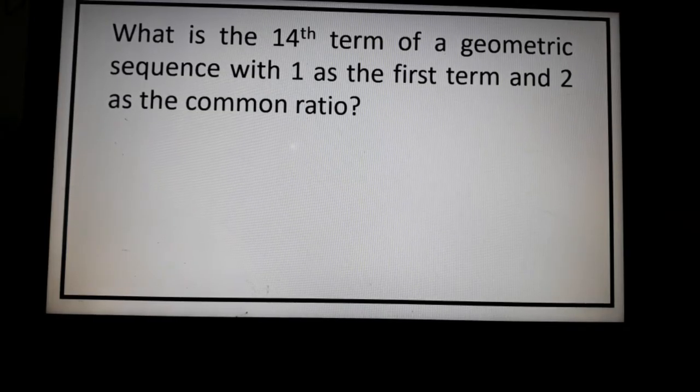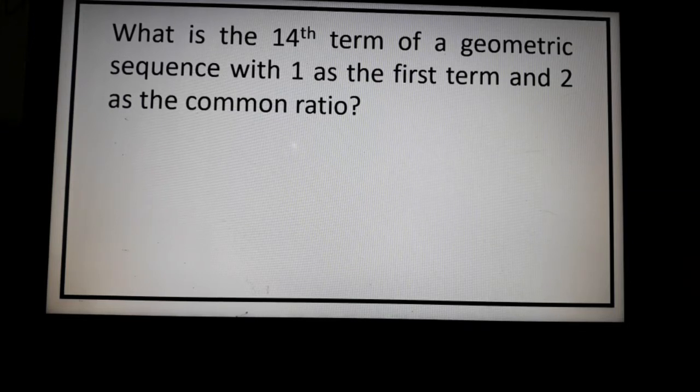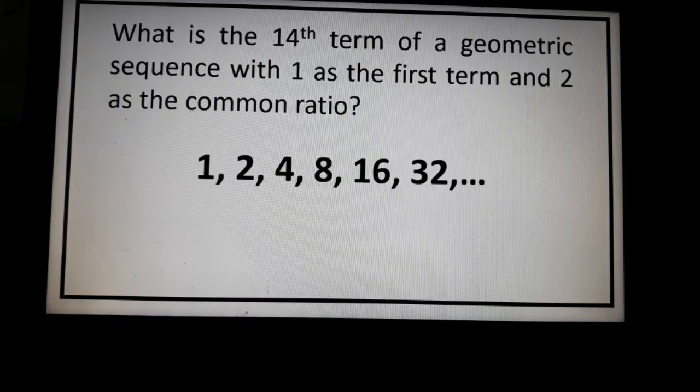So we'll start with 1. Then 1, you multiply that with 2, the answer will be 2. So you'll have the second term that's equal to 2. To get the third term, you multiply 2 and 2. So you'll have this geometric sequence. So you have 1, 2, 4, 8, 16, and 32.